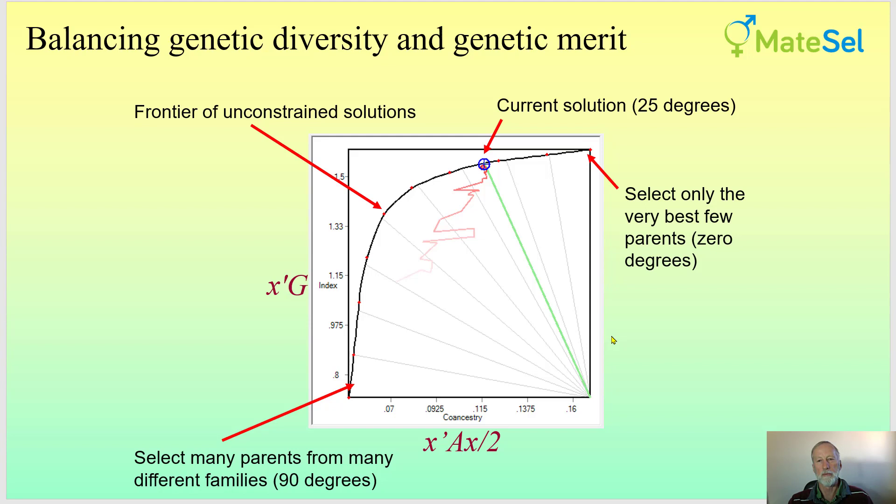So this is what the frontier looks like in MateSel graphical user interfaces, and the axes are genetic gain in the progeny or progeny index, and parental co-ancestry, which is a measure of diversity. So for co-ancestry, we want to be to the left where there's more diversity, as opposed to the right where there's more long-term inbreeding.